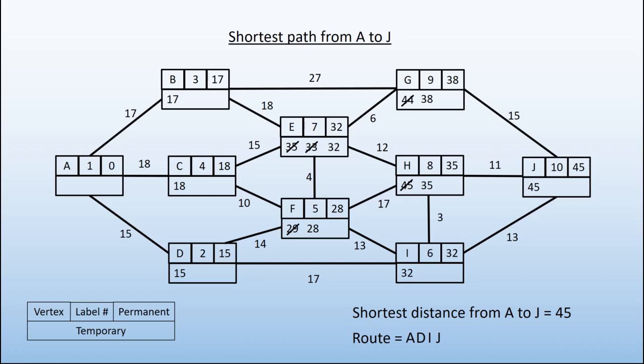Be careful when you're finding the route. Sometimes, depending on the graph, you may have two ways of getting, say, the 45. You do need to make sure that you are choosing a valid path. Other than that, good luck with using Dijkstra's algorithm.